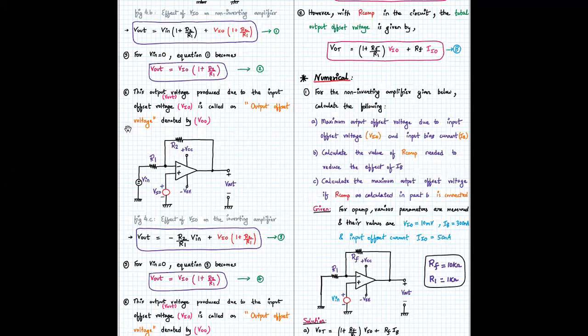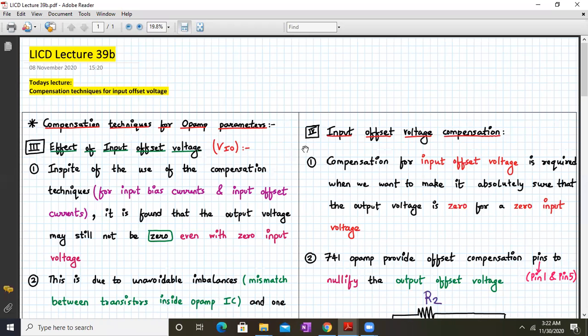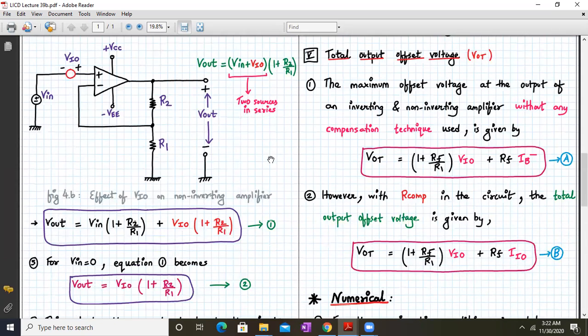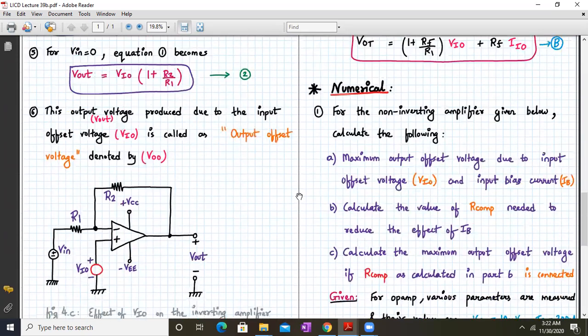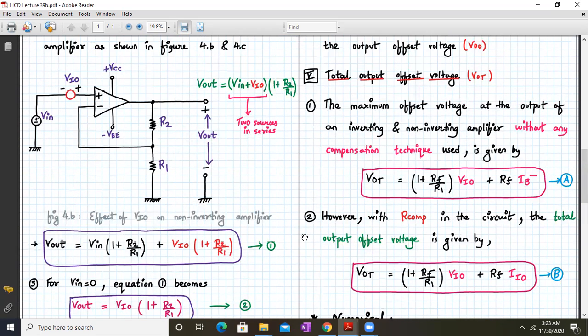So in this topic, in today's online session, we have covered the various techniques and compensation techniques for the op-amp parameters, specifically for input offset voltage, and we have seen the concept of total output offset voltage. We have solved one numerical based on calculating the maximum output offset voltage of an inverting amplifier. So I guess I'll stop over here. That's it for today. Next time we'll begin with a new topic. So until then, have a good day and thank you.